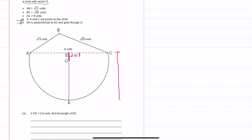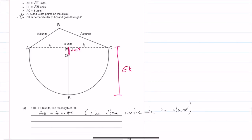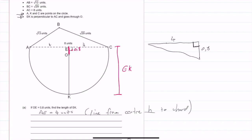We're looking for the length EK. To start, we find AE. We can say AE equals 4 units — and the reason is the theorem: a line from the center perpendicular to a chord bisects that chord. So AE equals EC equals 4 units. Drawing out the triangle, we have 4 units, 0.8 units, and a 90-degree angle.